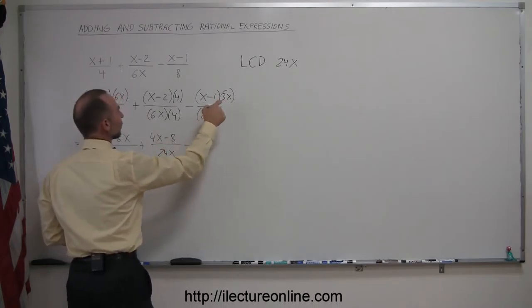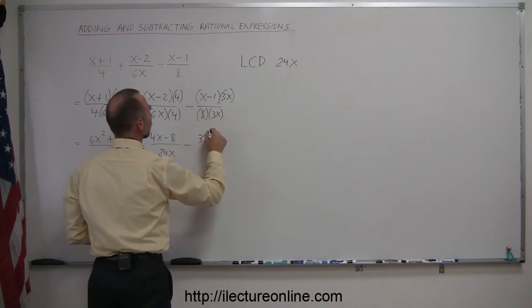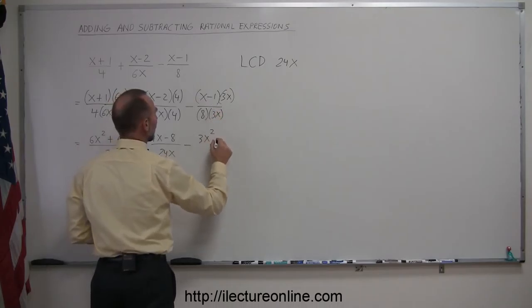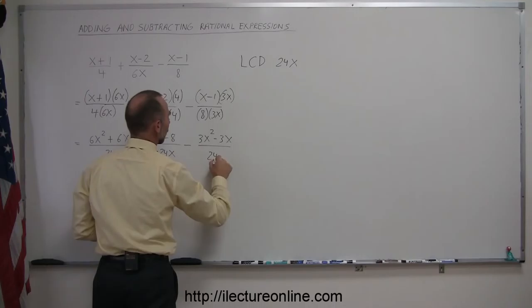And now here we subtract 3 times x, which is 3x squared, minus 1 times 3x is minus 3x, divided by 24x.